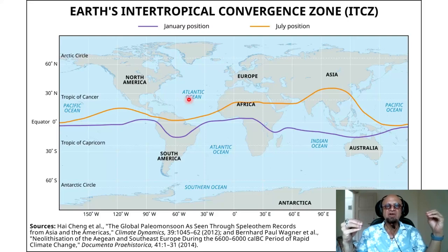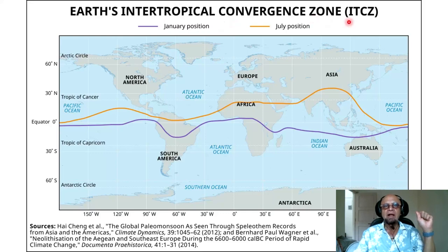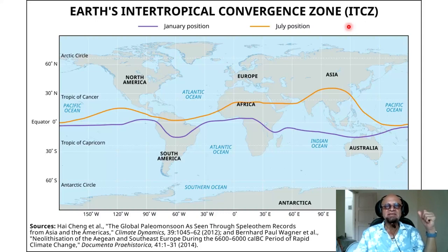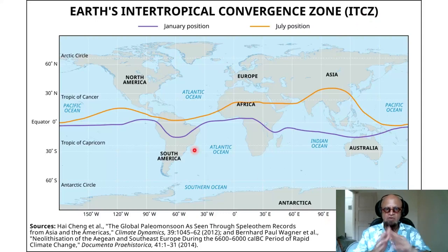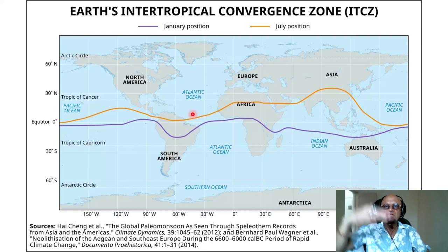We'll start with one simple figure. It's called Earth's Intertropical Convergence Zone, or ITCZ — in our area in India and the UK we say ITCZ, in the US they would call it ITCZ with a 'z' sound, and even the French say 'z'. This is from Encyclopedia Britannica. This figure is showing that there is the convergence band and rain band that moves seasonally.